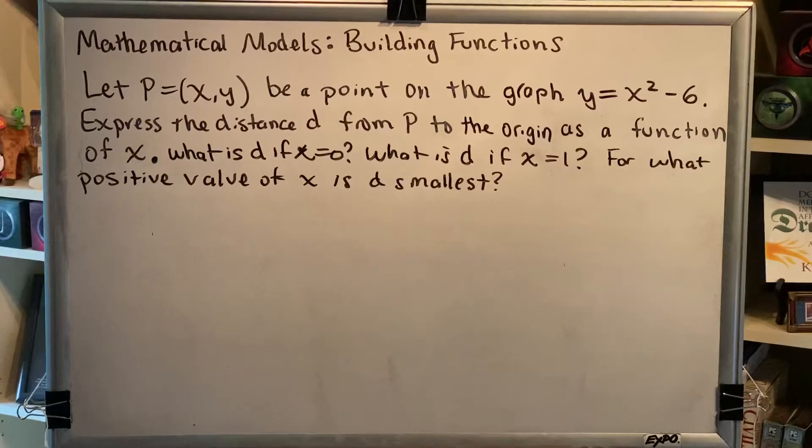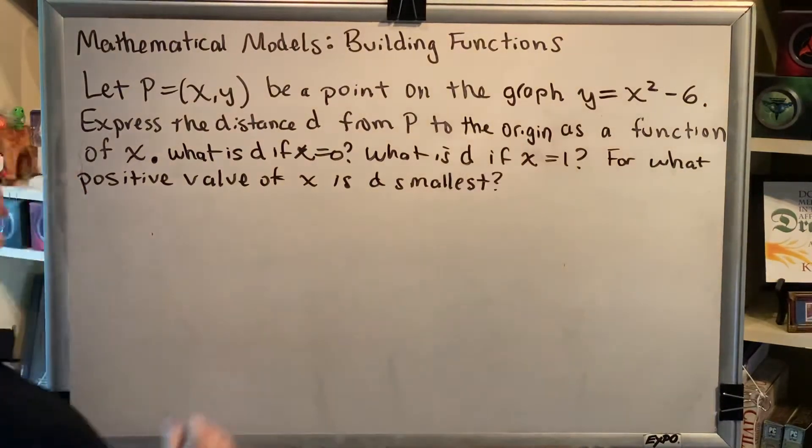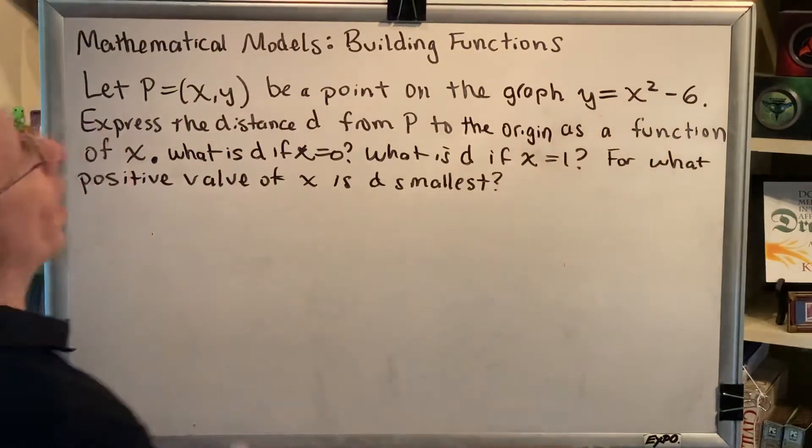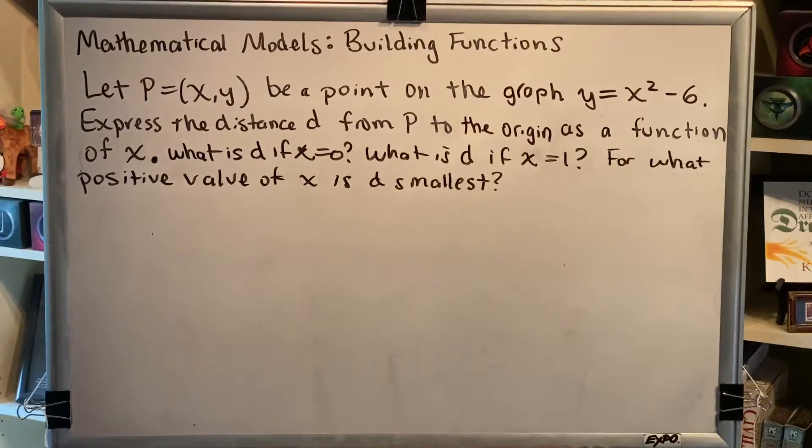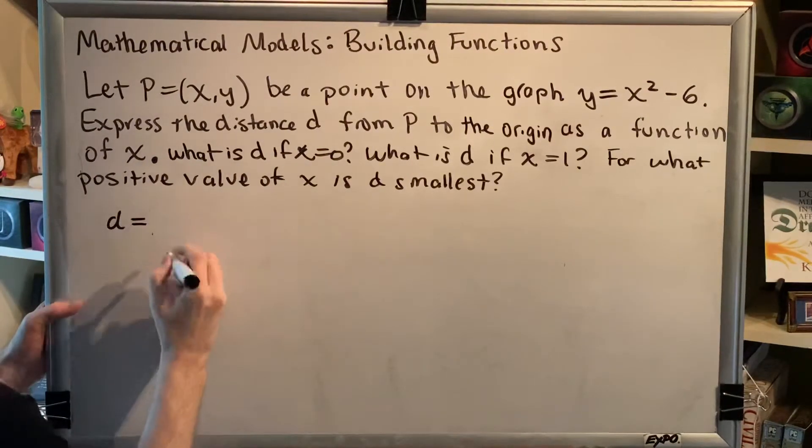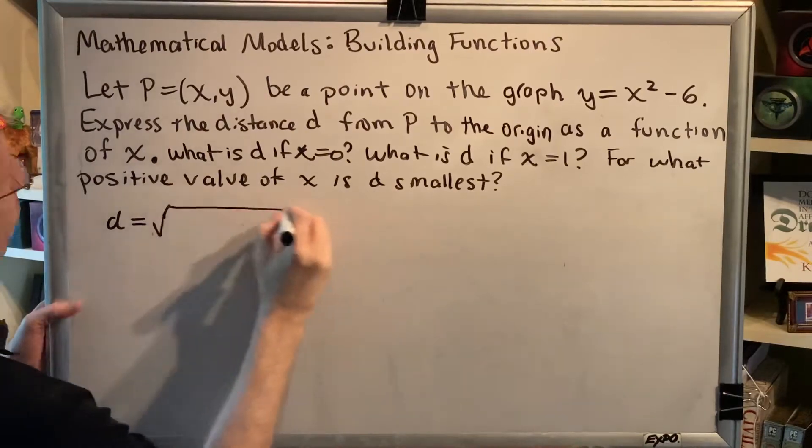Okay, great. So let's go ahead and solve this. We can see that this problem type is measuring the distance from a fixed point, the origin, to a point on a function, y=x²-6. And the method is to plug both points into the distance formula.